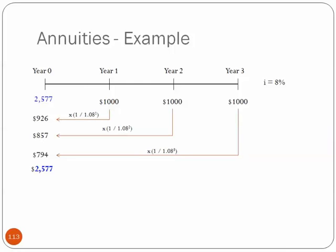I want to just rearrange these terms, the 1 divided by 1.08 to the first, second, and third, and just put them in the present value factor notation. I'm just converting it based on the math from the earlier slide. We can say that each term is being multiplied by its present value factor, $1,000 times 0.926, 0.857, and so on.